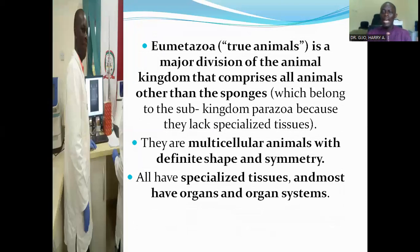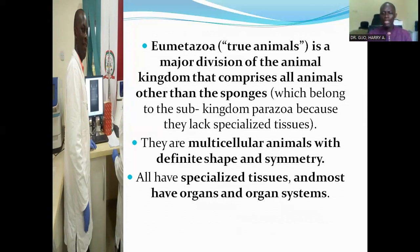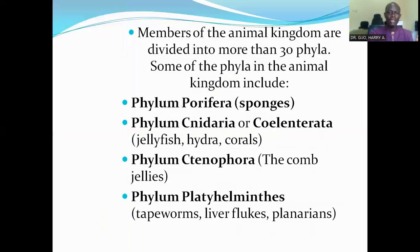Then we have organisms in the sub-kingdom Eumetazoa. Eumetazoa basically means true animals. The Eumetazoa is a major division of the animal kingdom that comprises all animals other than the sponges — all other animals other than the sponges, which belong to the sub-kingdom Parazoa because they lack specialized tissues. Every other animal belongs to the sub-kingdom Eumetazoa. They are multicellular animals with definite shape and symmetry, and they have specialized tissues, and most have organs and organ systems.